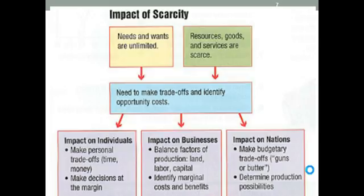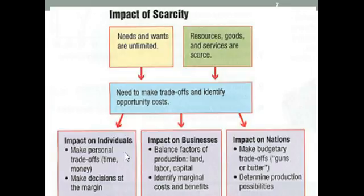The impact of scarcity is important, and I can't possibly overemphasize this idea. Needs and wants are unlimited, but resources, goods, and services are scarce. Because of this, we have to make trade-offs and identify what the opportunity costs are of those trade-offs. For individuals, you make personal trade-offs — time and money — and you make decisions at the margin. The impact on businesses: they have to balance the factors of production — how much land, labor, and capital they have and will use. They have to identify marginal costs and benefits of producing a product or keeping or hiring employees. The impact on nations is bigger: they have to make budgetary trade-offs. Guns or butter is a common example. And because they have to make trade-offs, they use the production possibilities model to determine those trade-offs.